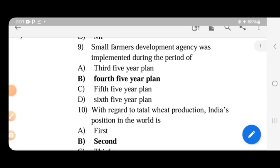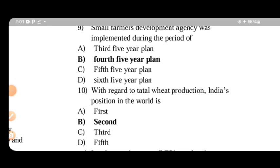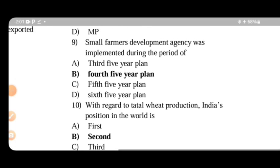Small Farmers Development Agency was implemented during which period? If we look at five-year plans, they are very important. The Small Farmers Development Agency was established in 1971 to 1972, which comes under the fourth five-year plan.